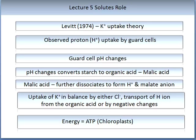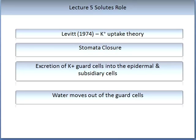This process requires energy. It is notable from the earlier anatomy that chloroplasts are present in guard cells — it is from these chloroplasts that ATP (adenosine triphosphate) is produced. ATP is chemical energy for the plant and significantly aids the uptake role. When stomata close, potassium ions are excreted from the guard cells into the epidermal and subsidiary cells. Along with potassium being pumped out, water also moves out of the guard cells.